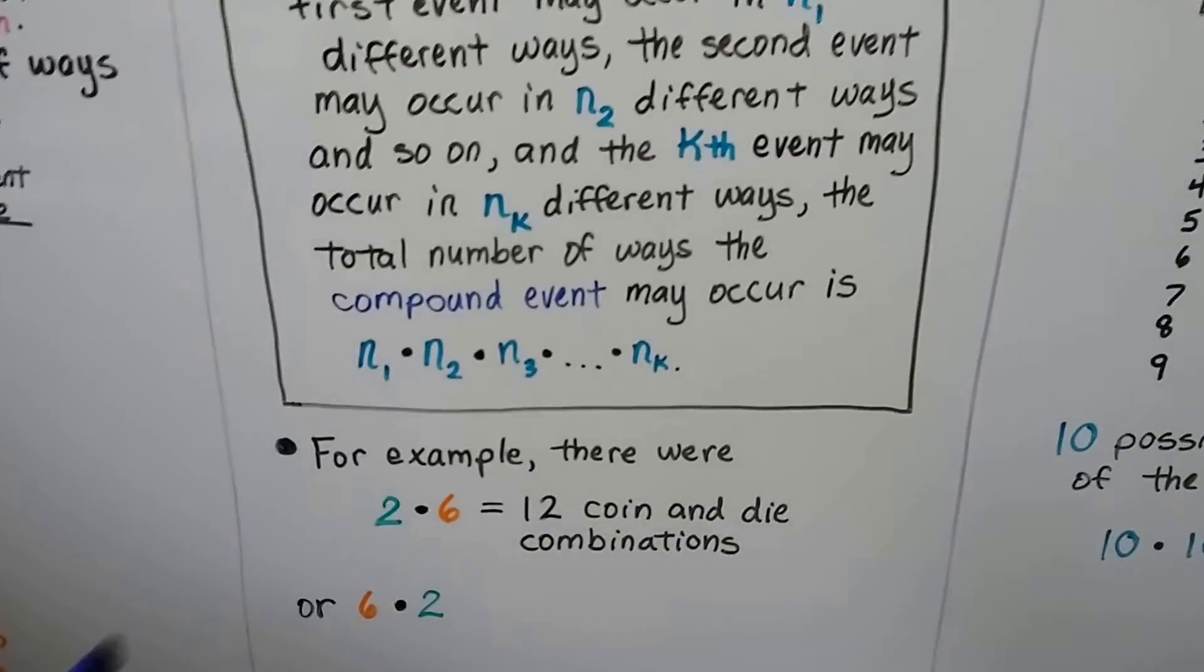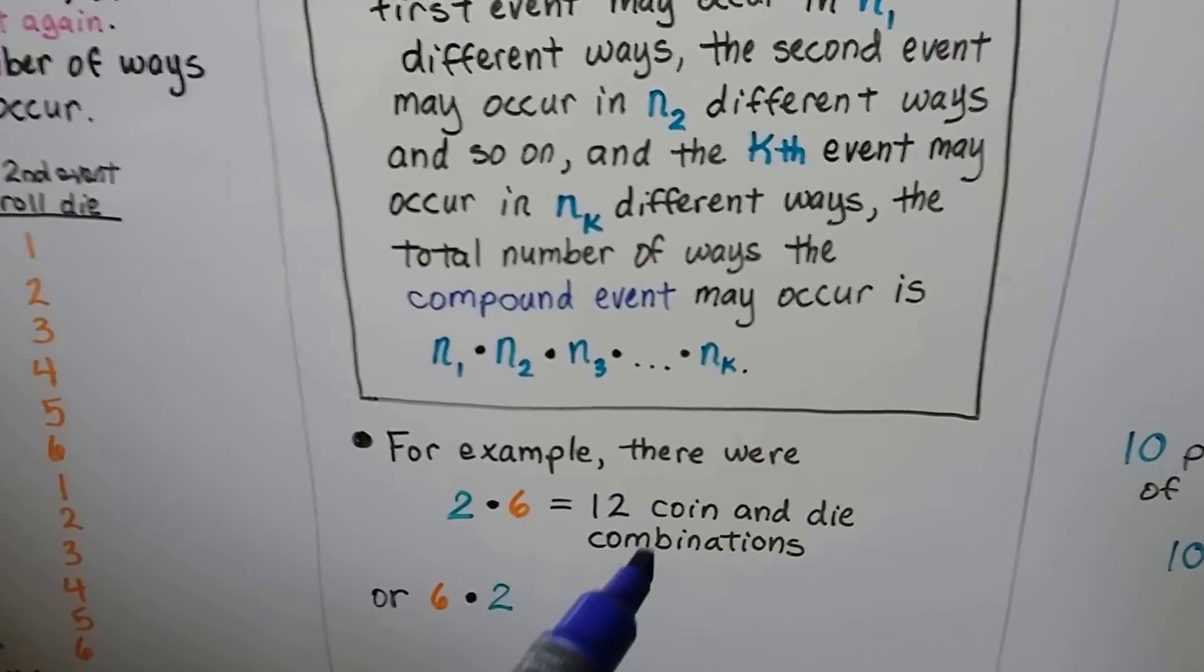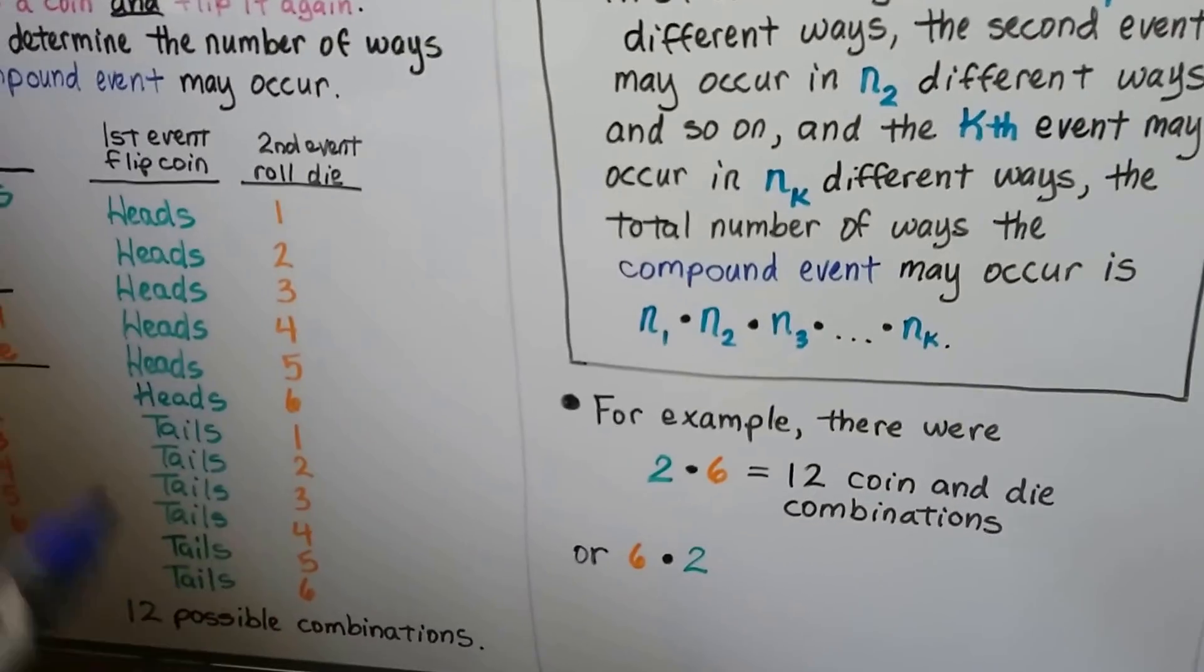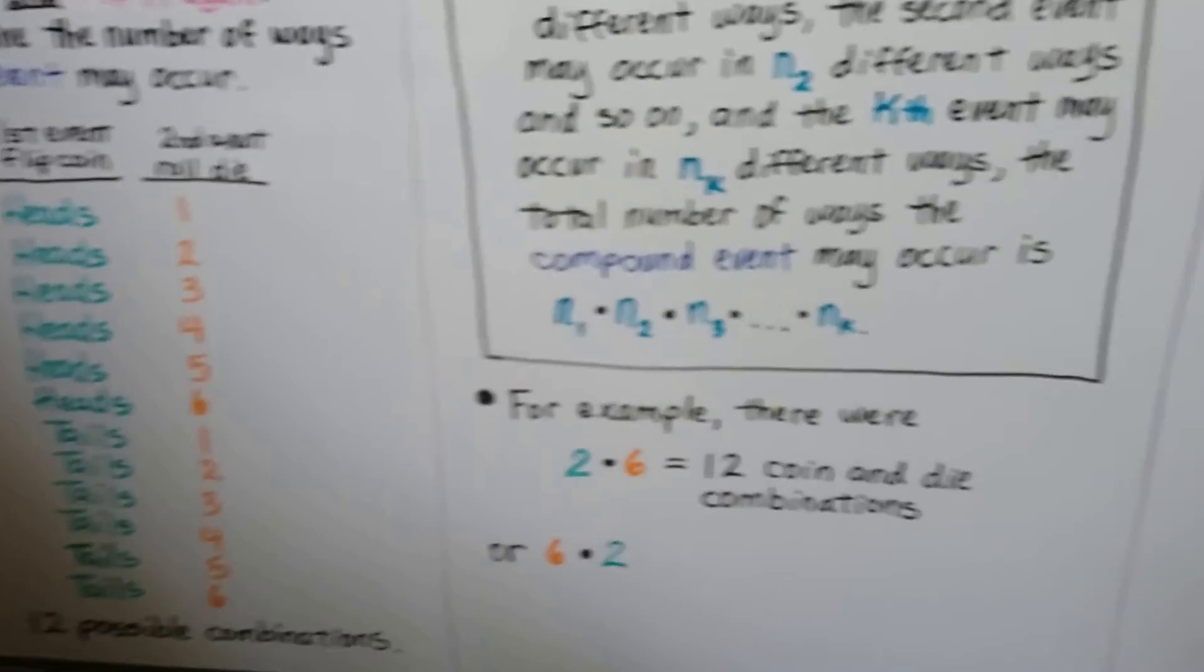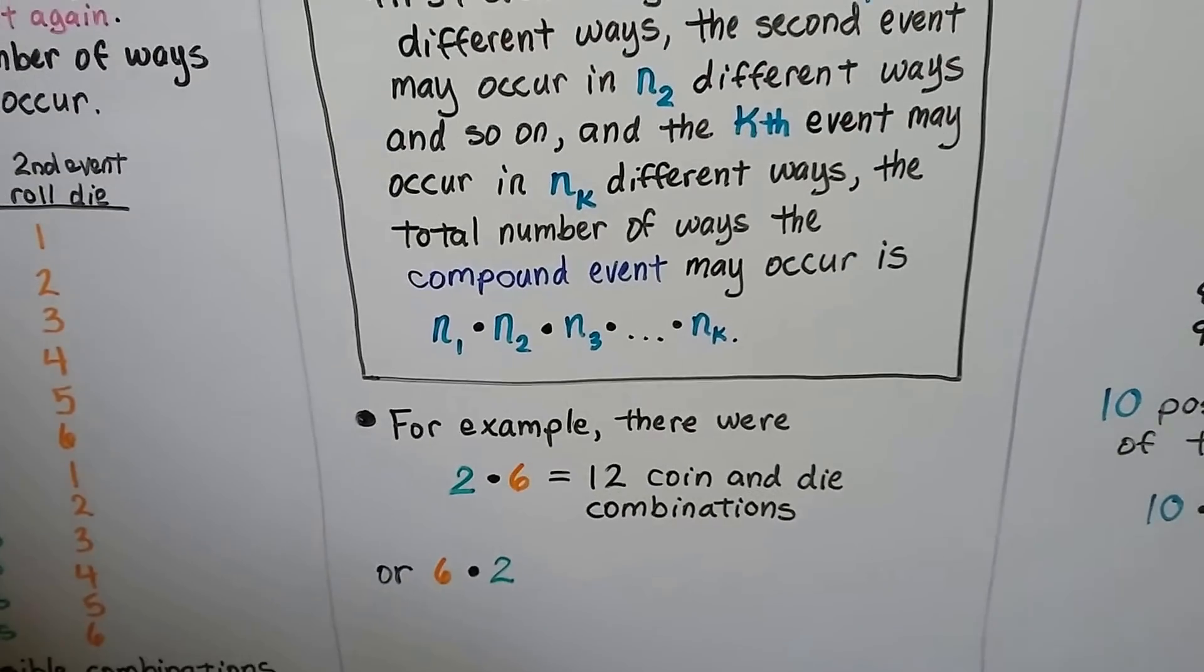For example, there were 2 times 6 equals 12 coin and die combinations here. We had 2 for the coin and 6 for the die. We could even say 6 times 2. It doesn't matter the order.